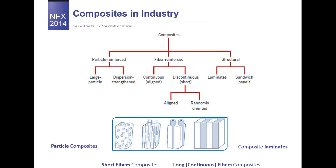Depending on the type of reinforcement, we can divide composites into three groups: particle reinforced composites, fiber reinforced composites, and structural composites. The first group is divided into large particle and dispersion strengthened composites. The second group consists of continuous and discontinuous fibers, and the third one includes laminates and sandwich panels.